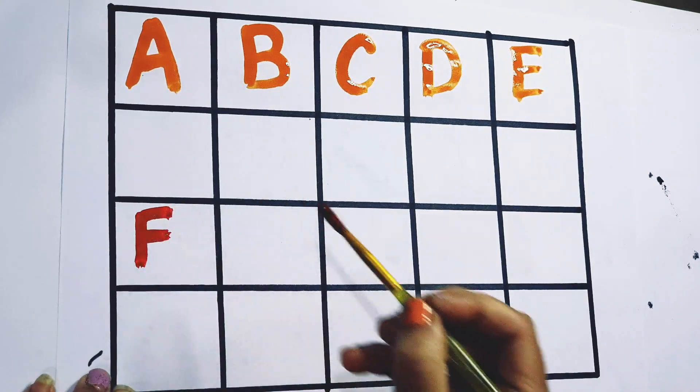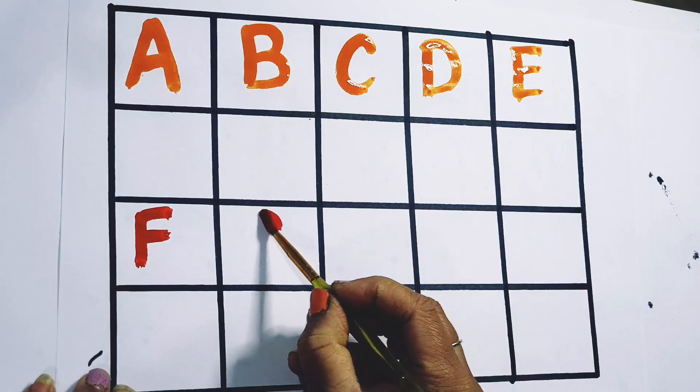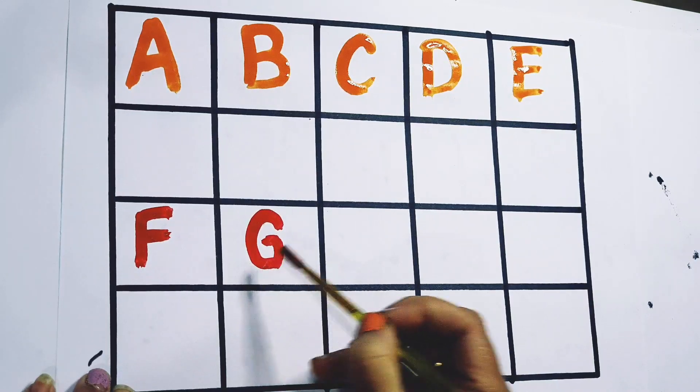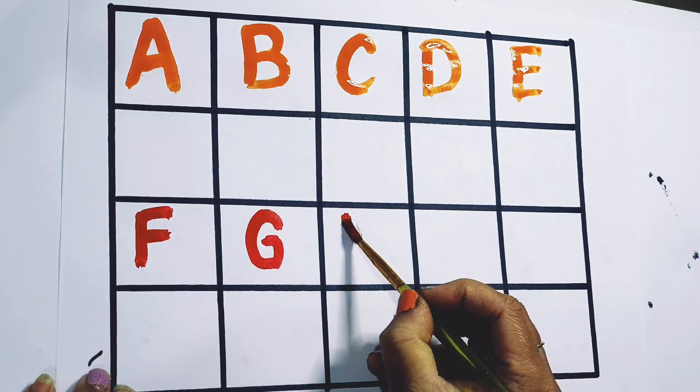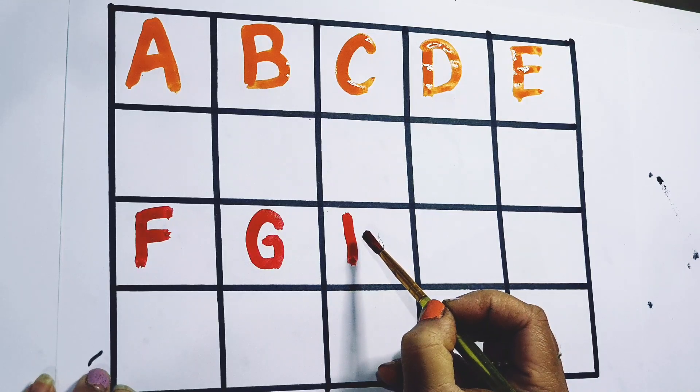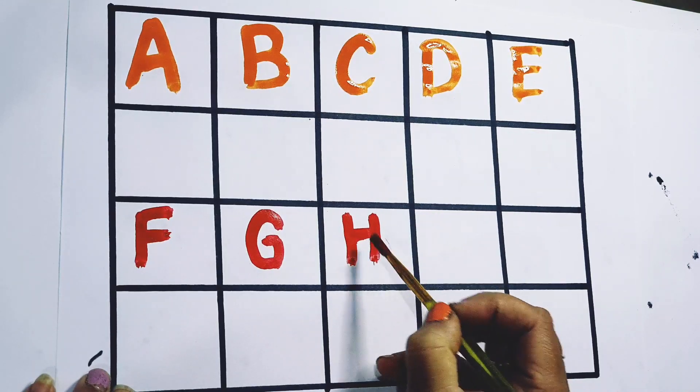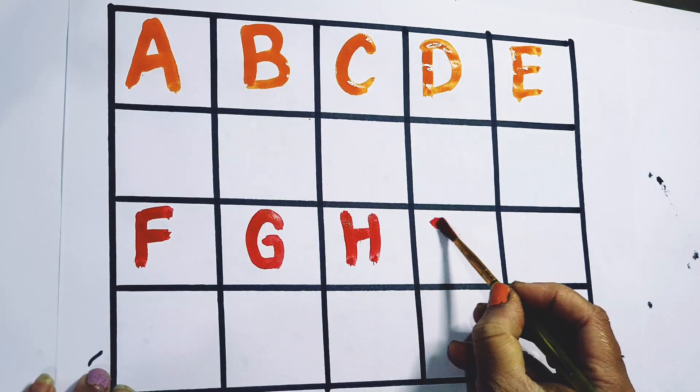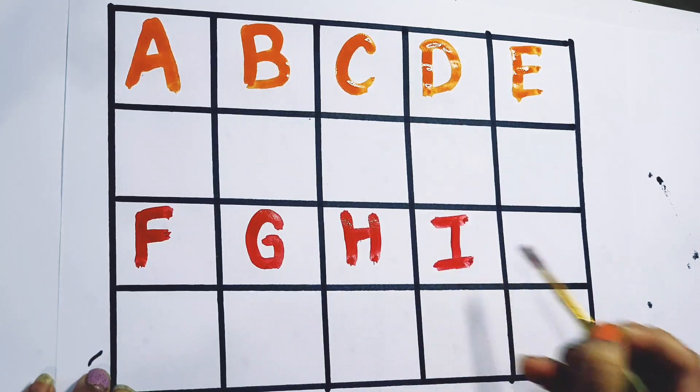F for fish, F for frog. G for girl, G for got. H for house, H for home.